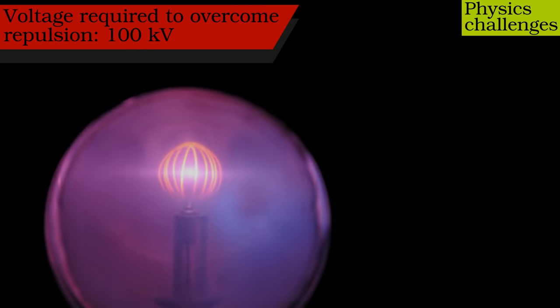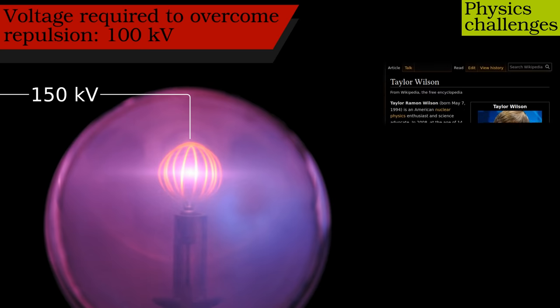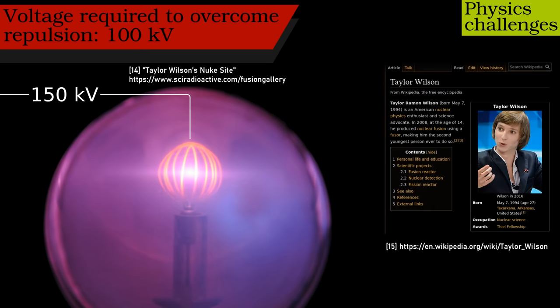For a larger, but not exactly astronomical amount of money, I could have built a dedicated, souped up version of this type of device called a fuser. This is just what a kid called Taylor Wilson did when he was 14 years old. His fuser accelerated deuterium so that a small fraction underwent fusion and released energy.